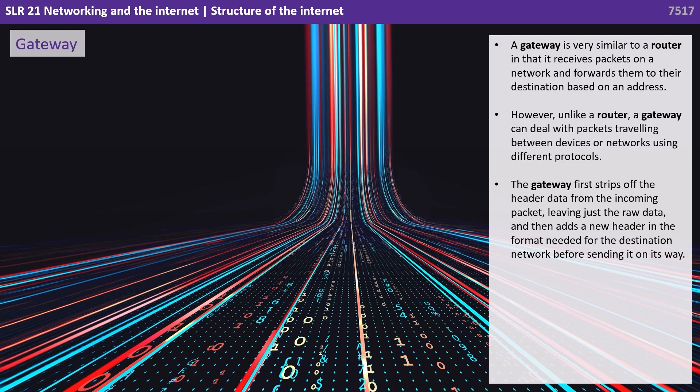A gateway in many ways is very similar to a router in that it receives packets on a network and forwards them to their destination based on an address. However, unlike a router, a gateway can deal with packets travelling between devices or networks using different protocols. The gateway first strips off the header data from the incoming packet, leaving just the raw data, and then adds a new header in the format needed for the destination network before sending it on its way.